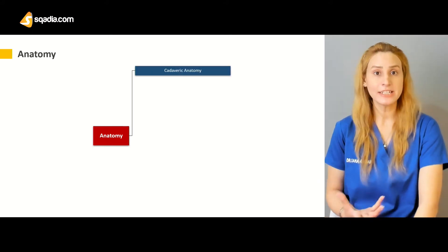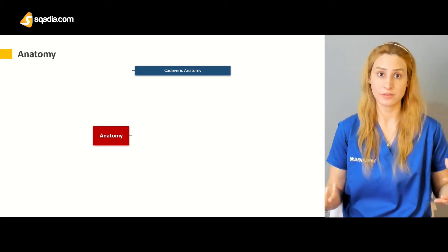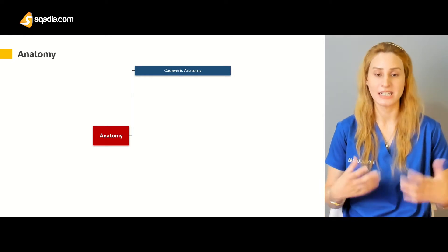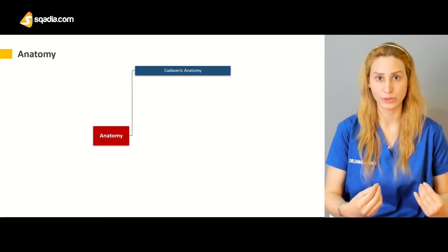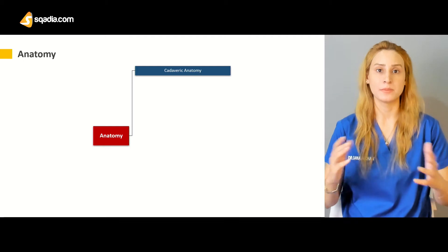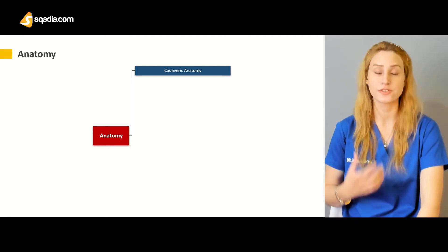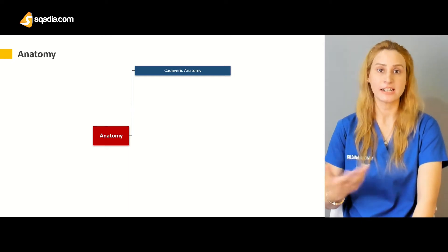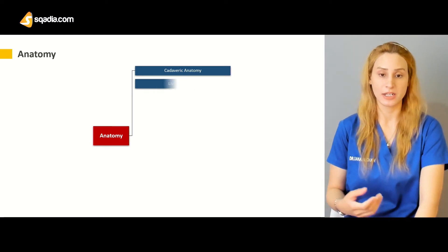Cadaveric anatomy is the anatomy in which we study on cadavers — dead bodies. It involves dissecting organs and studying every detail: the bones, muscle attachments, their origins, their insertions, and the basic relationships of important structures. So cadaveric anatomy is about studying anatomy on dead bodies.